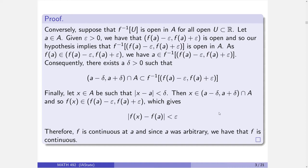Take any element X that lives in big A that is within delta of A. I'm going to show that f(X) is within epsilon of f(A). Since we're in here and we're in A, that means we're in this interval. That is a subset of this inverse image, so f(X) must live in this set, which means exactly what I wanted. F is continuous at A. And since A was arbitrary, that means F is continuous at every point in A — meaning it is a continuous function.